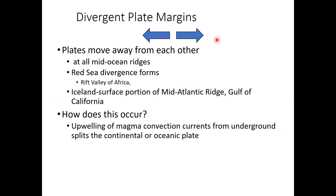At divergent plate boundaries, plates are moving away from each other. Every mid-ocean ridge is a divergent plate boundary. We're going to look at a couple of places — one being the Red Sea and the other being the Gulf of California. The Red Sea has a mid-ocean ridge at its bottom and it's opening up. We can look at the Red Sea like an ancestral Atlantic Ocean — this is exactly how the Atlantic Ocean became the ocean it is today.